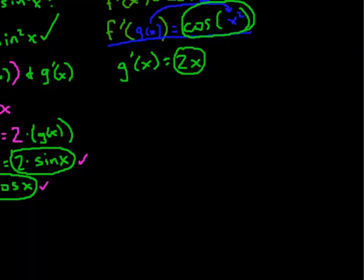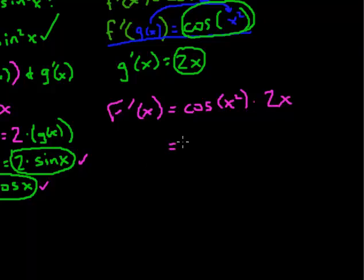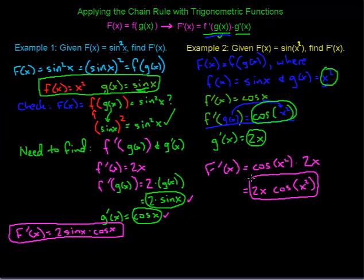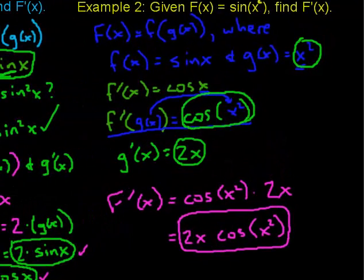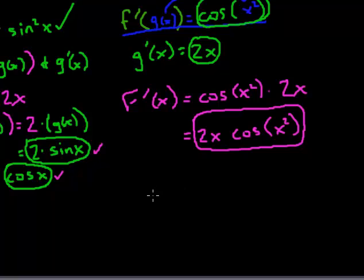So our final answer is capital F prime equals cosine of x squared times 2x. The 2x can be brought out in front so we don't mistakenly multiply it with our angle — that's something students sometimes do. Our final answer is 2x times the cosine of x squared. You can see there's a difference between the two answers: in the first example we were squaring the trig function, and in the second we were squaring the angle, so the derivatives come out differently. I hope this helps you understand how to apply the chain rule with different trig functions.